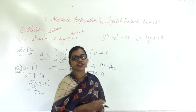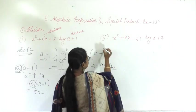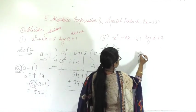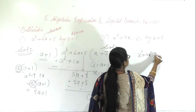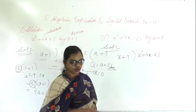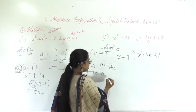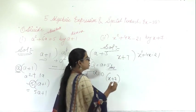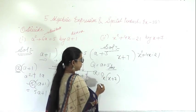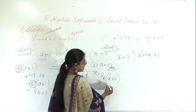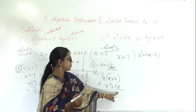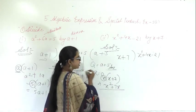Now for the second question, write down the dividend first. What is given? x squared plus 4x minus 21 divided by x plus 7. So here x plus 7 is there. By which number will you multiply to get x squared? If I multiply with x, I get x into x is x squared, x into 7 is 7x, so I get x squared plus 7x.